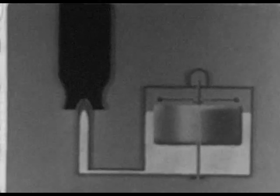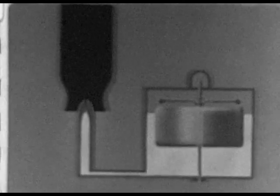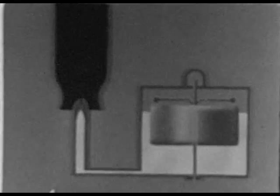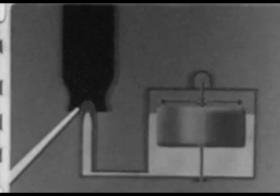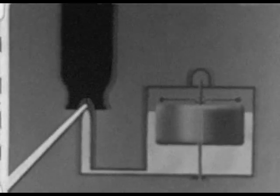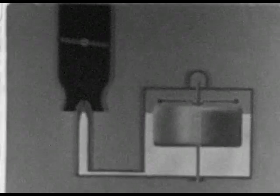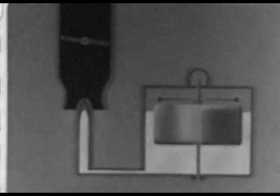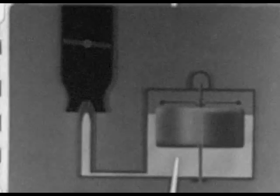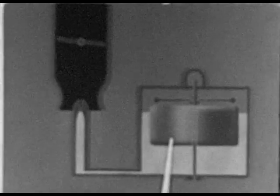A simple carburetor, without compensating devices, consists of an air intake passage, a fuel jet, a throttle, and a float which regulates fuel level in the float chamber. This carburetor must be modified to produce the required mixtures under all conditions, in spite of these varying factors.